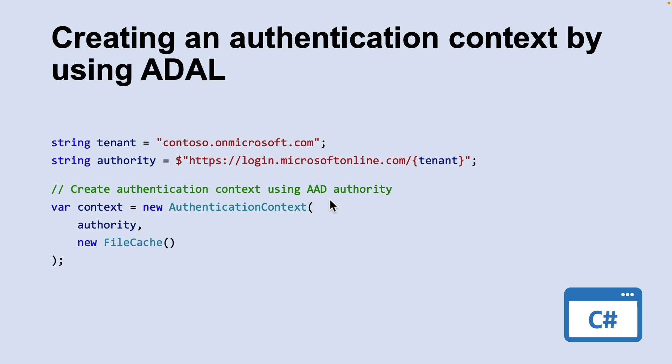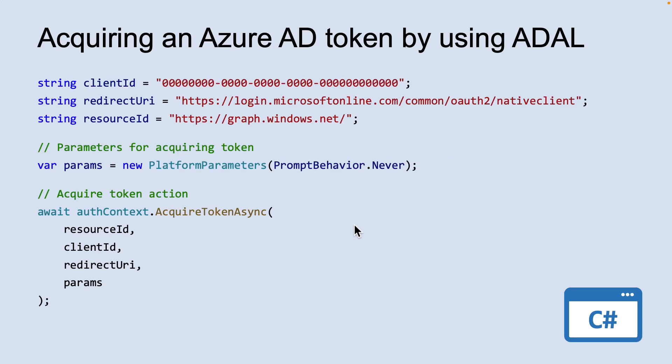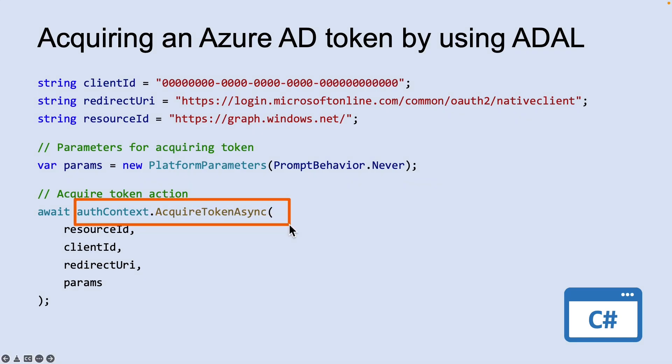Let's look at how to create an authentication context by using ADAL. First, you initialize your app's authentication context, which is ADAL's primary class. Authentication context is where you pass ADAL the information it needs to communicate with Azure AD and tell it how to cache tokens. The basic principle is that whenever your app needs an access token, it simply calls AuthContext.AcquireTokenAsync and ADAL does the rest.